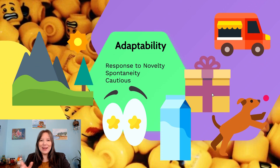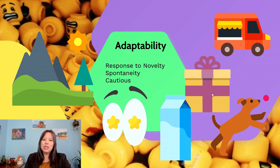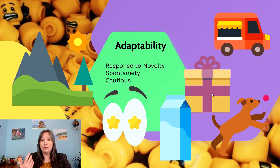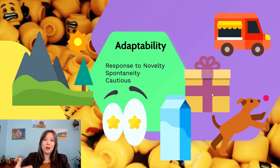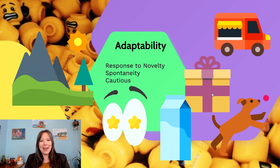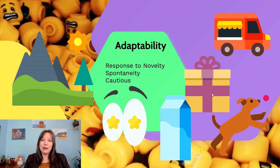Next up is a similar and overlapping dimension — adaptability. This is less about social adaptability and more about novelty in general. Adaptable infants might be more social, but they're also more interested in going to new places, eating new foods, trying new games, and experimenting with new toys. You can also see how this overlaps with rhythmicity. At one end, if you take them to a coffee shop with new smells, sounds, and sights, they're okay with that. At the other end, they might panic even when something new is pleasant, like a new toy or a new fun experience.